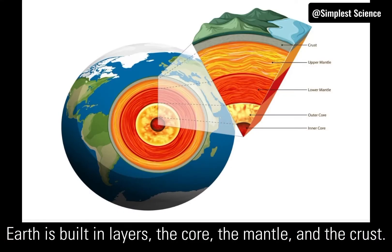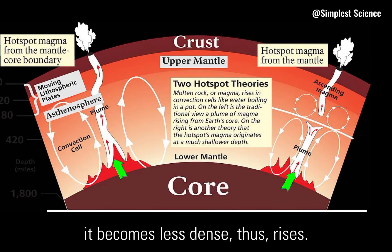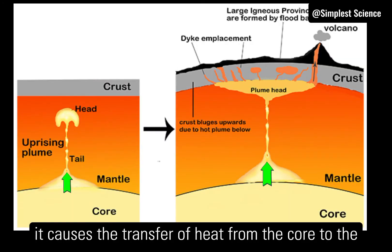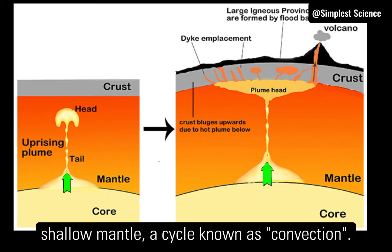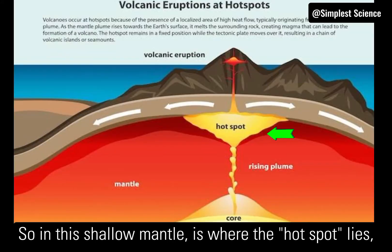Earth is built in layers: the core, the mantle, and the crust. As the core heats up the bottom mantle rocks, they become less dense and rise by physically moving the rocks or mantle plumes above, causing the transfer of heat from the core to the shallow mantle — a cycle known as convection. The shallow mantle is where the hot spot lies.